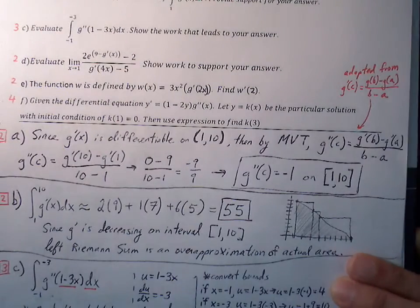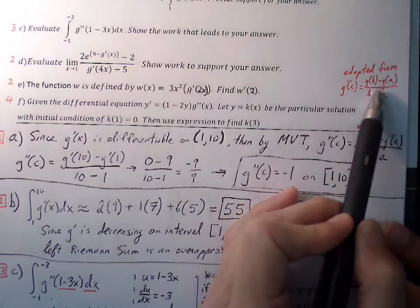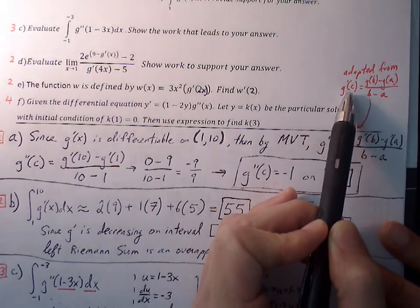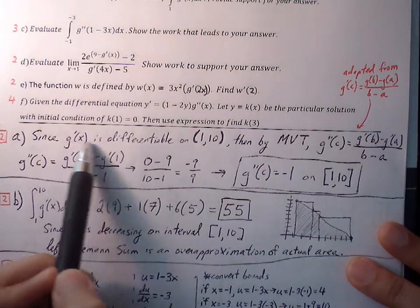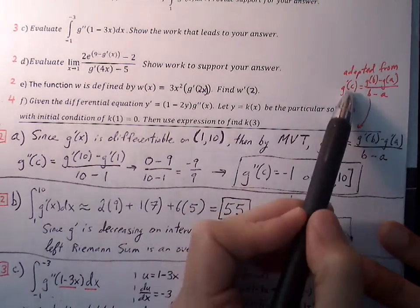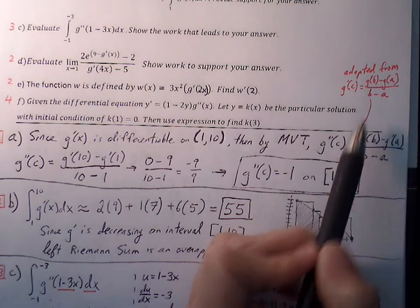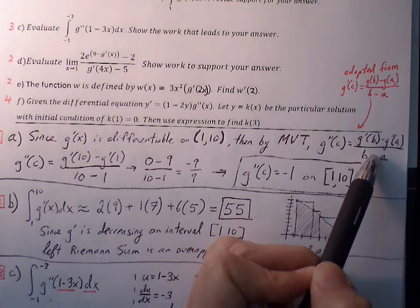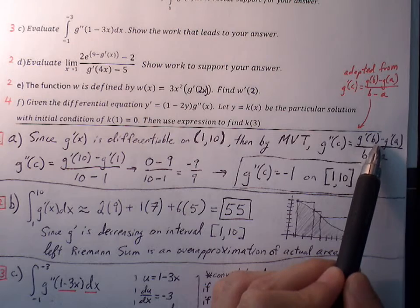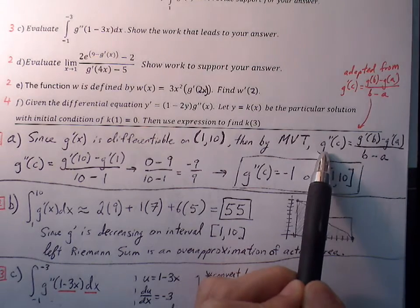Mean Value Theorem says that as long as it's a smooth curve, I can find the slope between the endpoints and that slope is going to be guaranteed to sit somewhere between those endpoints as a tangent line. Since G prime is differentiable, which also means it's continuous, we can adapt Mean Value Theorem to now apply to G double prime. So we can find the slope between endpoints of the G prime graph and know that slope will be shared by the second derivative at some point.